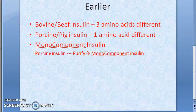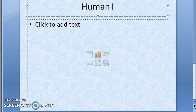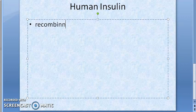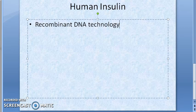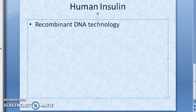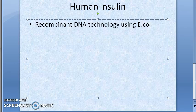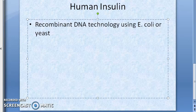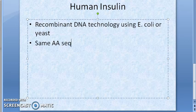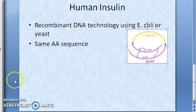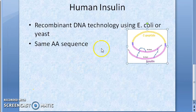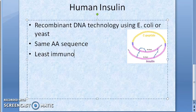Next, we come to human insulins — this is what is important. Human insulins are prepared from recombinant DNA technology using E. coli or yeast. They are human derivatives with the same amino acid sequence as endogenous insulin, the same amino acid sequence as human insulin. Hence these are least immunogenic — they don't cause antigenic reactions in the body.